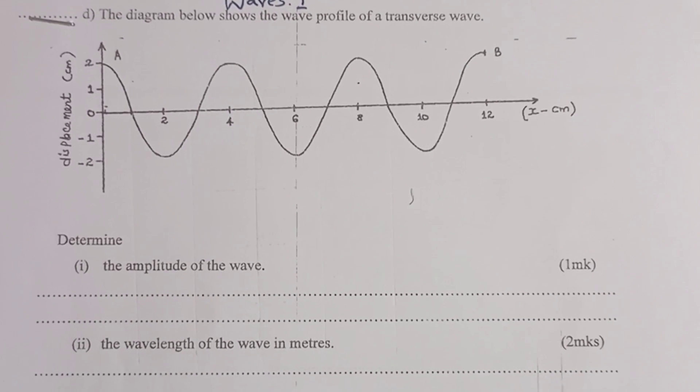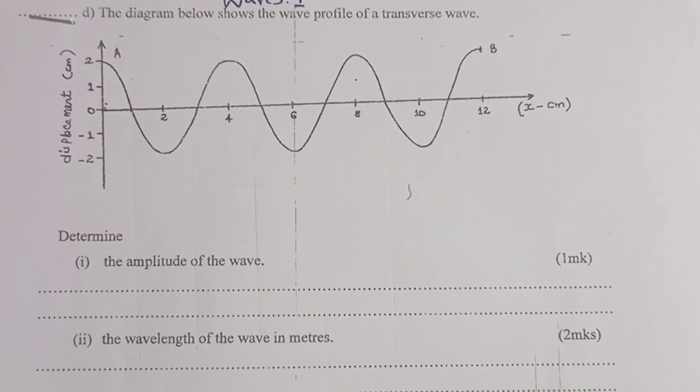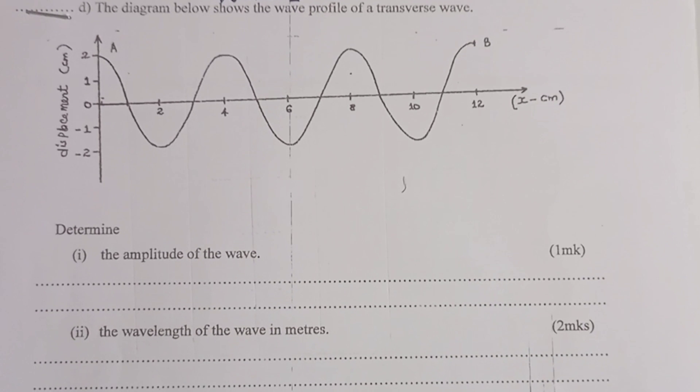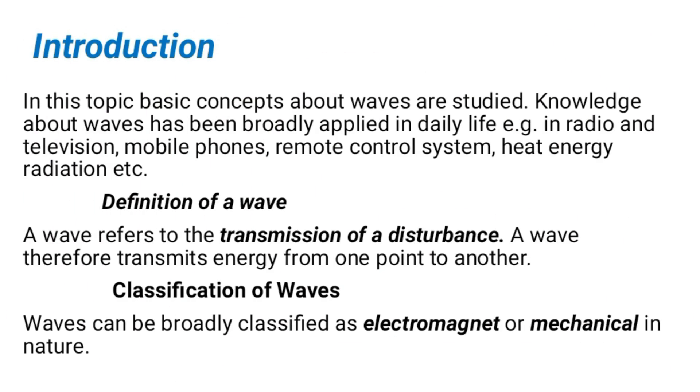In summary, we start with the introduction. Under introduction we define wave. A wave is a transmission of a disturbance, and therefore a wave transmits energy from one point to another. Waves are classified into two, electromagnetic and mechanical wave.